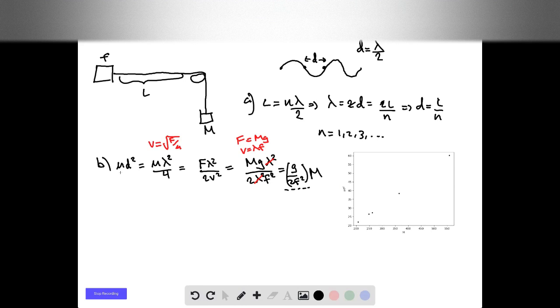This is our dependent variable, μd². We see that this is just of the form y equals mx plus b, where b is going to be 0. And our slope m is this g over 2f². So that's why it's linear, because when we look at μd² versus m, it's a linear function with a slope of g over 2f².